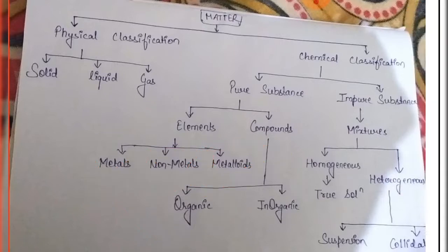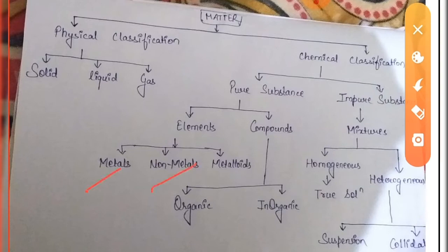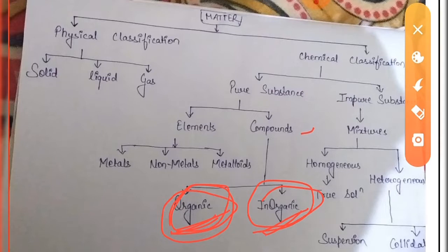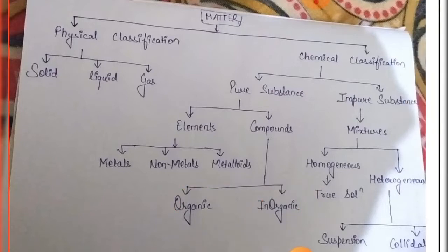Elements are classified into three parts: metals, non-metals and metalloids. Coming to compounds — compounds are another main part of pure substance. Compounds are mainly classified into organic compounds and inorganic compounds. Organic compounds are those compounds which contain carbon in them. These are the two main classifications of compounds.